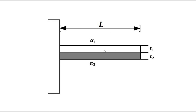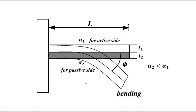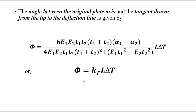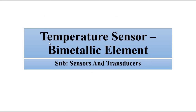So this is the basic principle of the bimetallic temperature sensor. Two metals with different coefficients of thermal expansion and different thicknesses are welded together. When exposed to an environment where temperature has to be measured, the element undergoes bending due to temperature fluctuation, and this bending angle is related to temperature change as per the derived relationship.